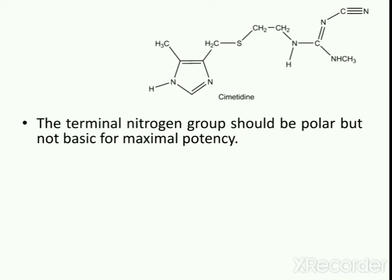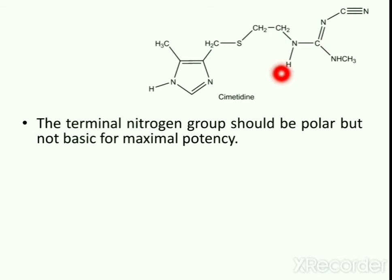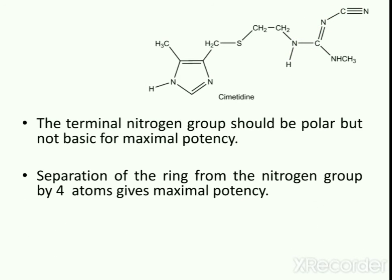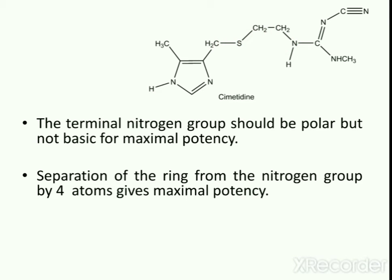The terminal nitrogen group should be polar but not basic for maximal potency. In H2 antagonists, the terminal nitrogen should be polar and have acidic character. Separation of the ring from the terminal nitrogen group by 4 atoms gives maximal potency — there are 4 atoms between the ring system and the terminal nitrogen: 1, 2, 3, and 4.